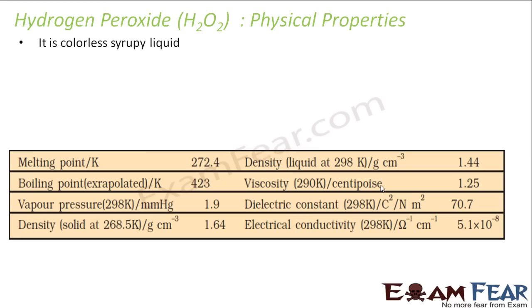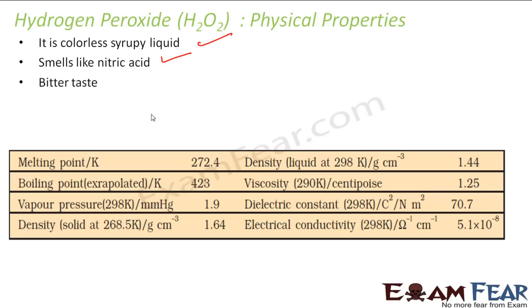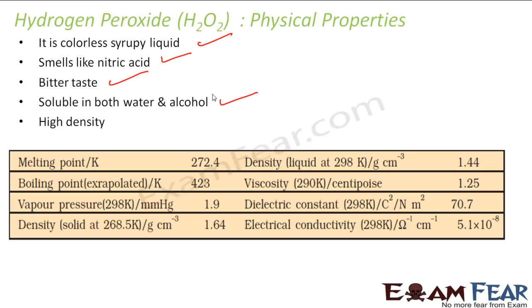Let's talk about some physical properties of hydrogen peroxide. It is a colorless syrupy liquid. It smells like nitric acid — a very bad smell. It is bitter in taste, and it is soluble in both alcohol and water. It has high density, as you can see from the chart — the density is 1.44.